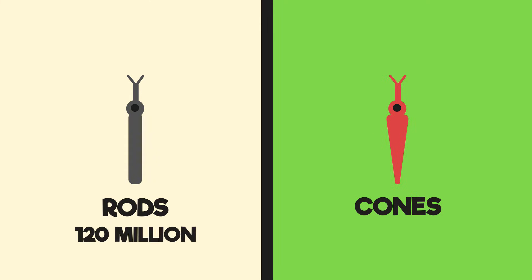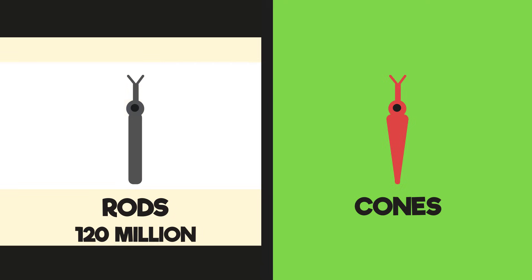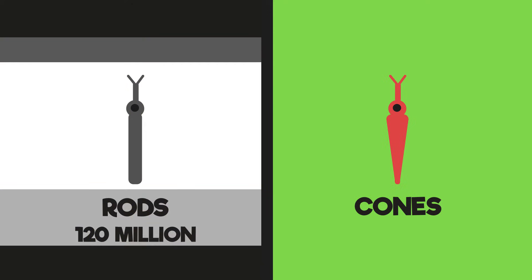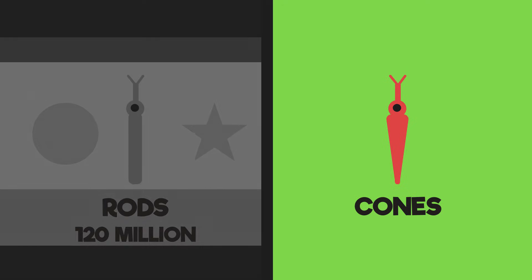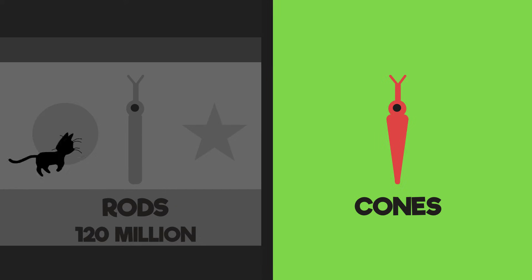We have approximately 120 million rod cells, which allow us to see black, white and shades of grey. The rods enable us to determine the shape of objects. As rods are sensitive to reduced light, they provide us with night vision and so nocturnal animals have lots of rods.